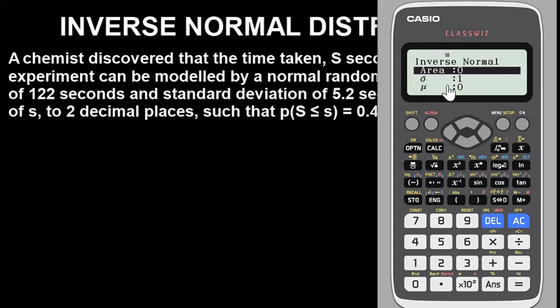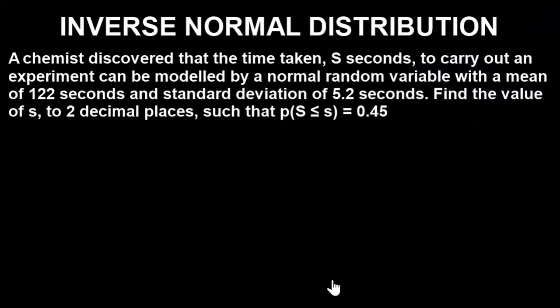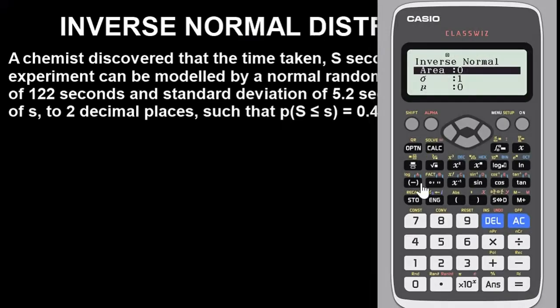For the area here, our area would be 0.45, the probability that X is less than or equal to S, which is 0.45. The standard deviation is 5.2, so input 5.2 here. Press down. For our mean, it's 122 seconds, so we put 122 here. Press equals to get the result.